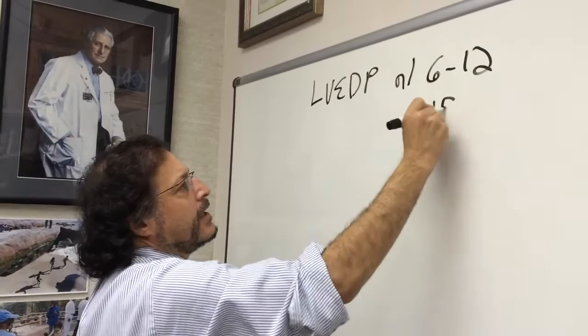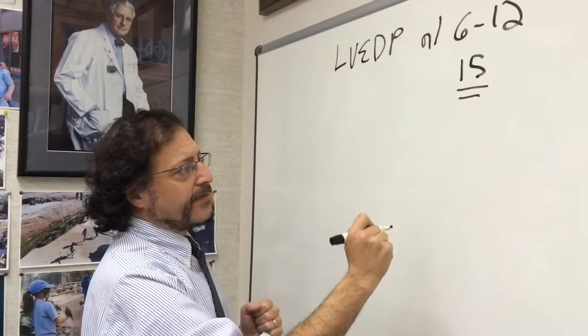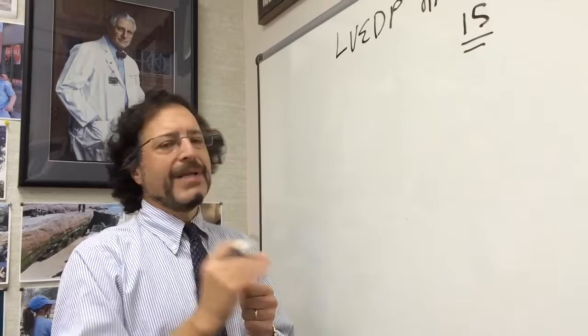When we achieve an LVEDP of 15, we are clearly abnormally elevated. At this point, when LVEDP reaches 15, there is direct back pressure transmitted to the left atrium, which directly transmits back pressure to the pulmonary venous system. But that's where back pressure ends.